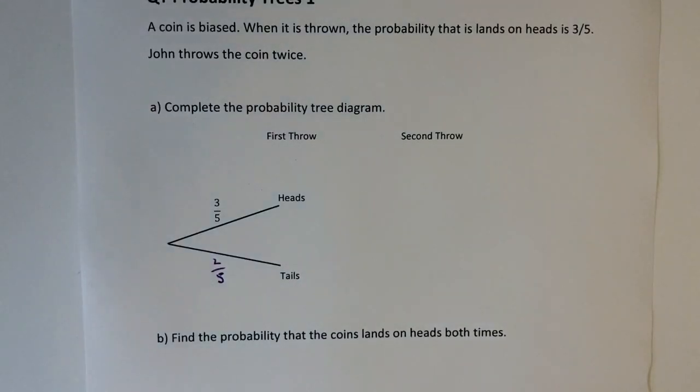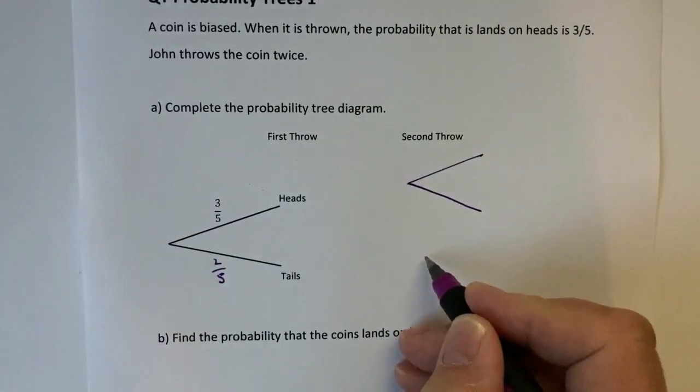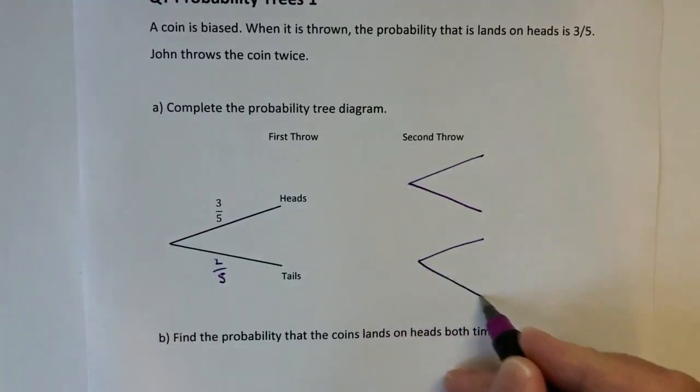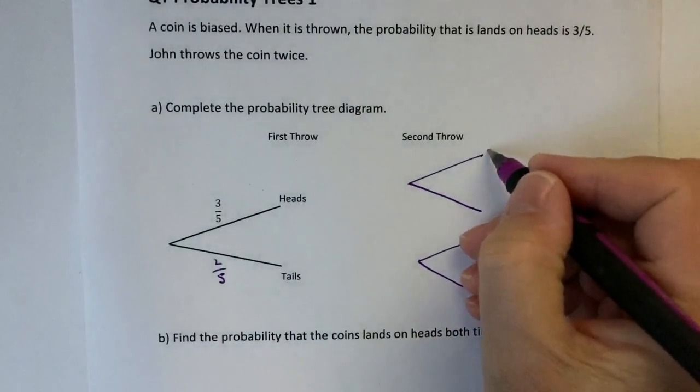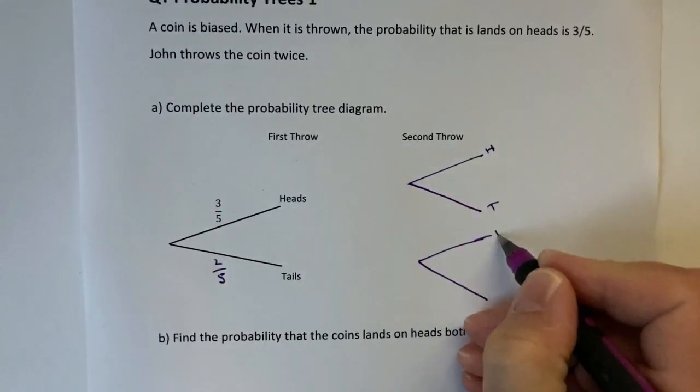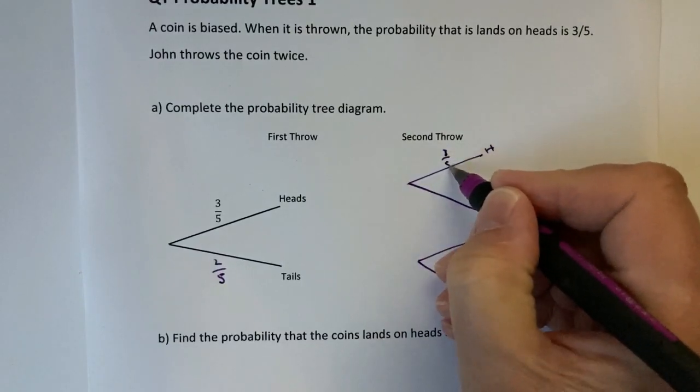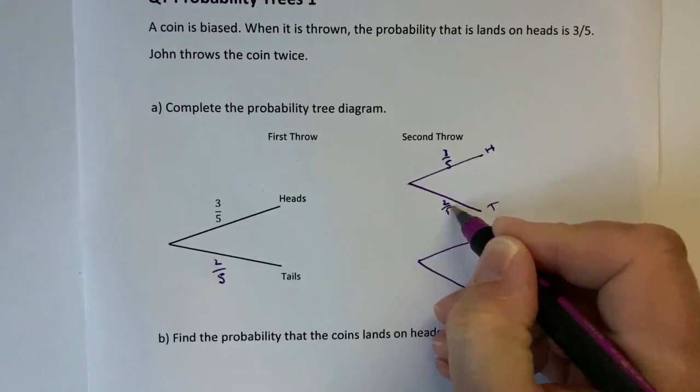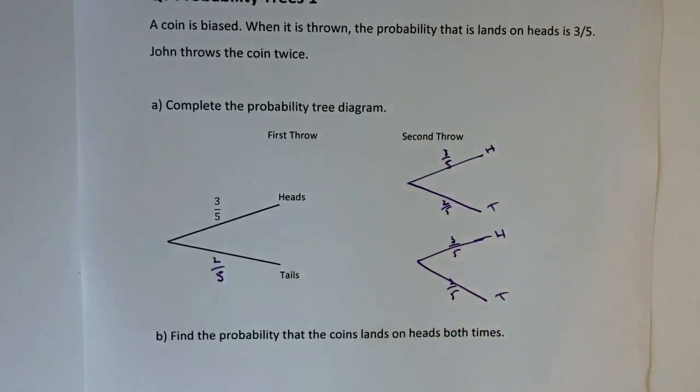Okay, let's have a look then at the second throw. Well the second throw is going to be absolutely the same in that it doesn't matter. The second throw is still going to be heads and tails and heads and tails and it's still going to be three out of five, two out of five, three out of five, two out of five. Now the reason I've done it twice is because it's independent of the first outcome.